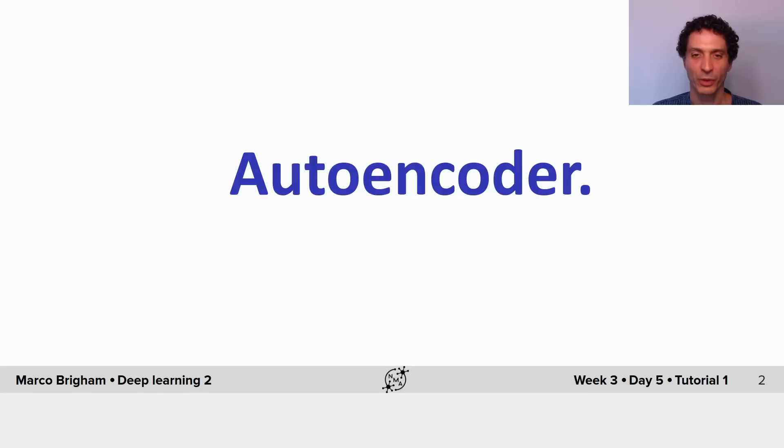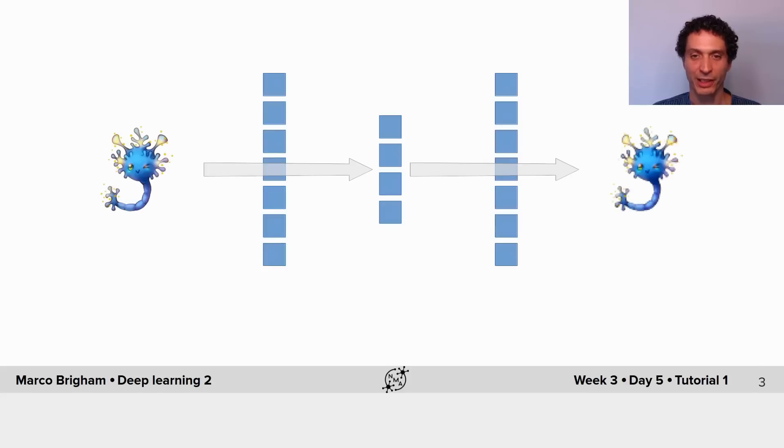In this tutorial we'll cover autoencoders that are artificial neural networks that learn representations of data by compressing data into a lower dimensionality representation in the bottleneck layer and reconstruct it back into the original dimensionality.